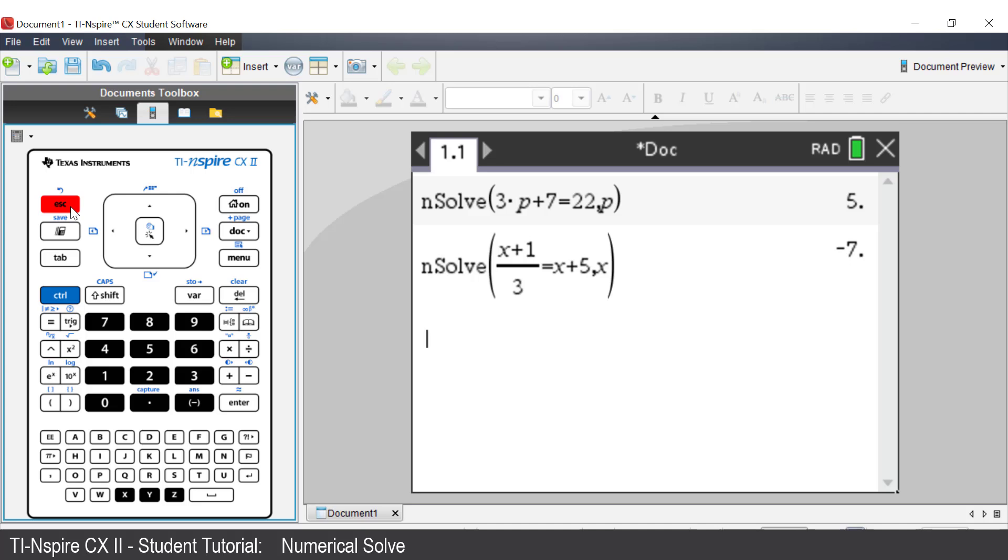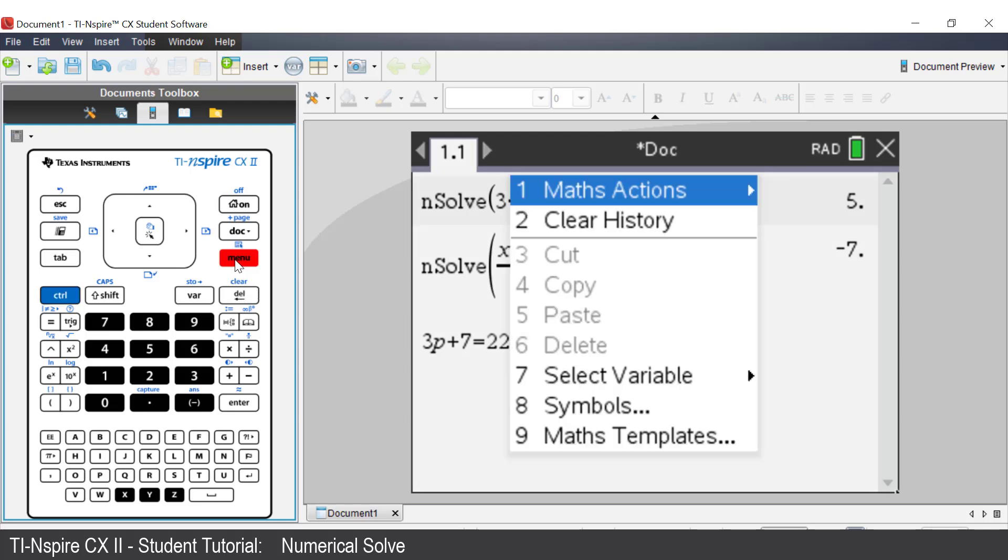Enter the equation to solve. Let's solve 3p plus 7 equals 22. After entering the equation, now press Control, and then press Menu.